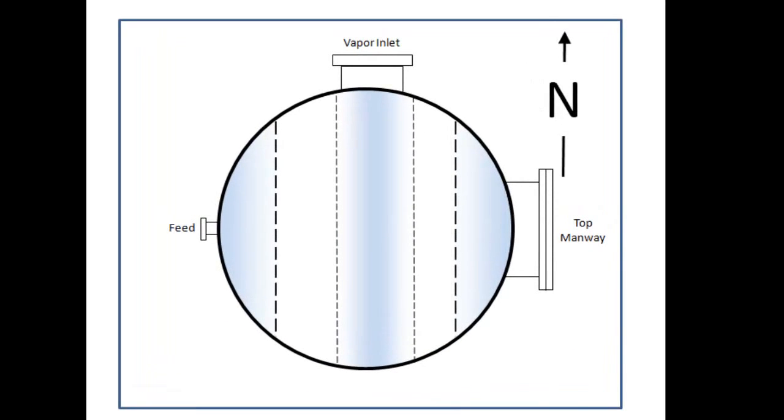This is a plan view of the tower showing the tower had two-pass trays. In other words, the trays formed an alternating pattern wherein the even number trays had a center active area with two outside downcomers, and each of the odd number trays had two outer active areas with a single center downcomer.